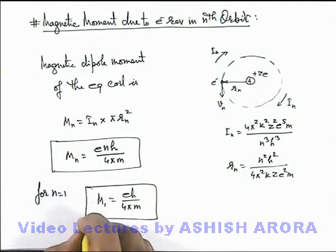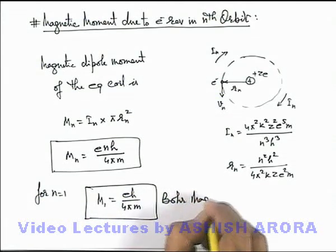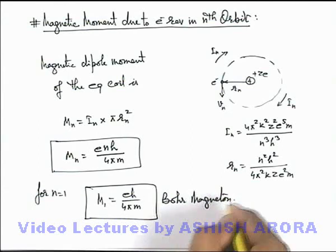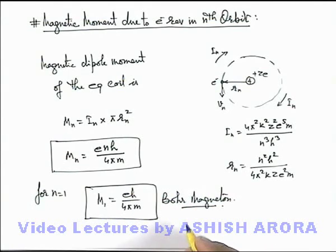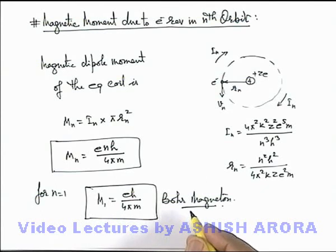This we can see is a familiar term for all of you which we call Bohr magneton. And this itself has a very important characteristic value in defining the magnetic properties of materials, which you might have studied or you'll study in the section of magnetic properties.